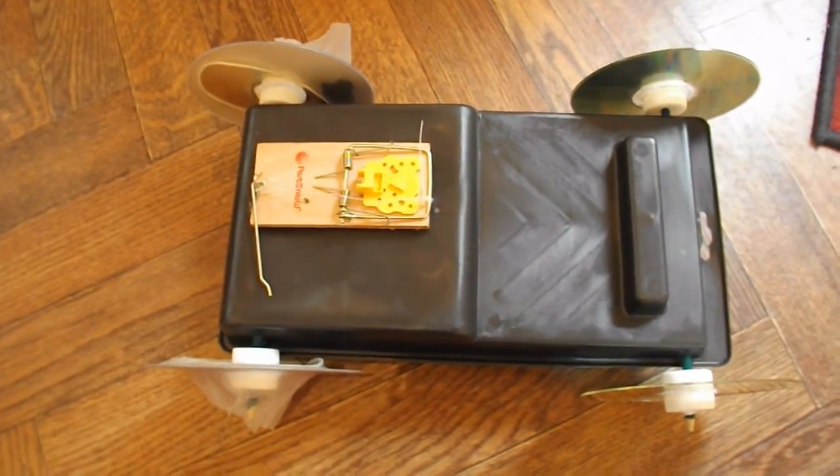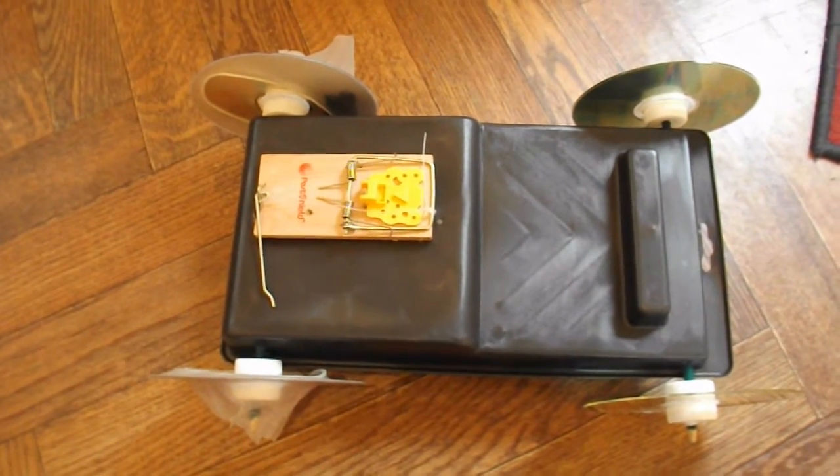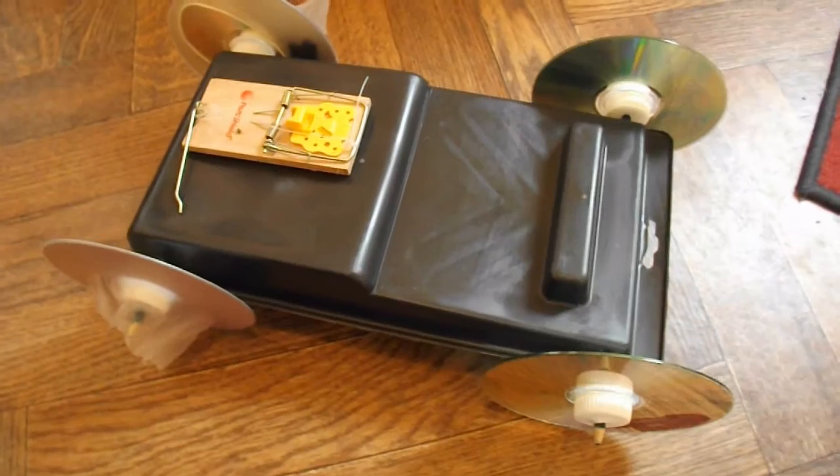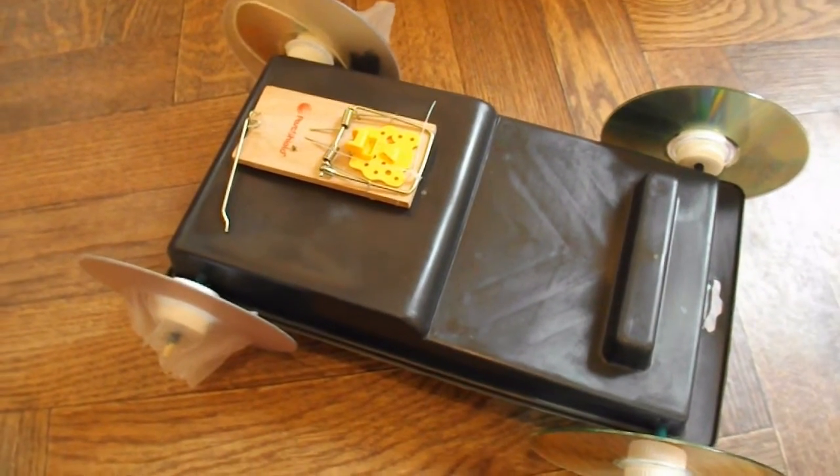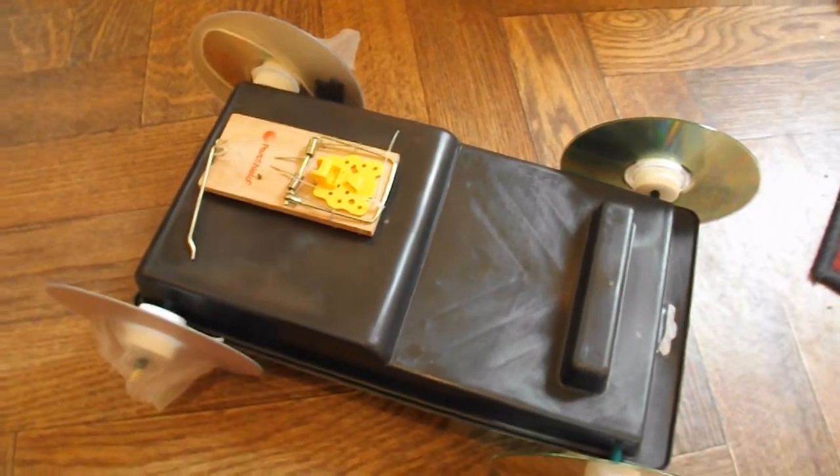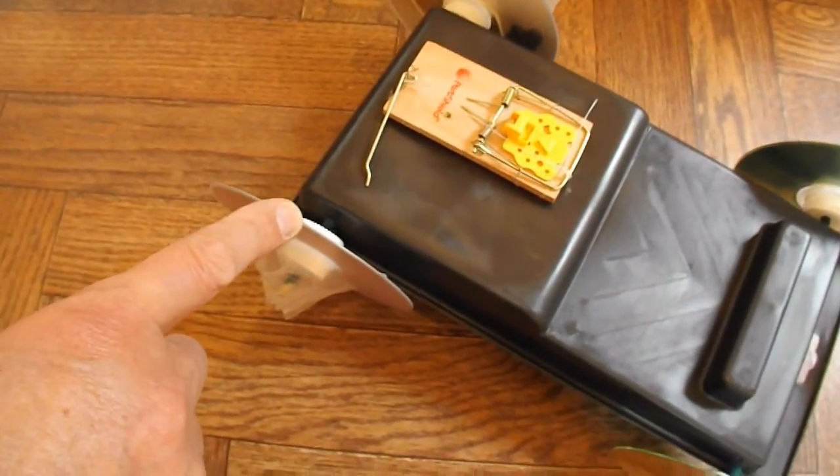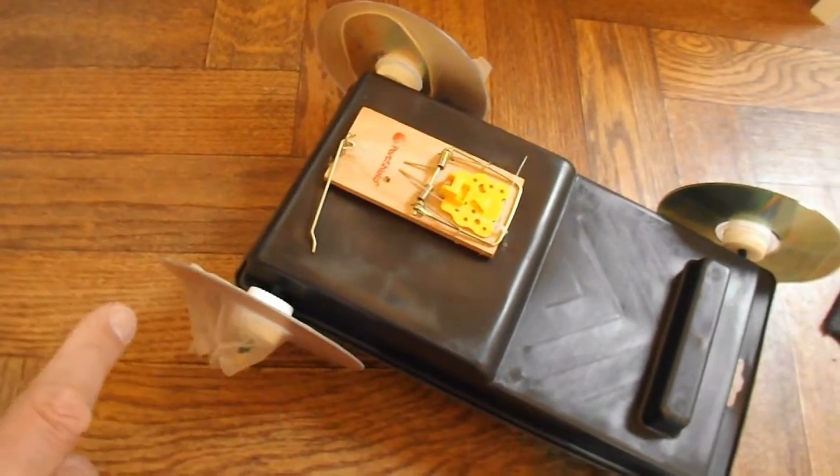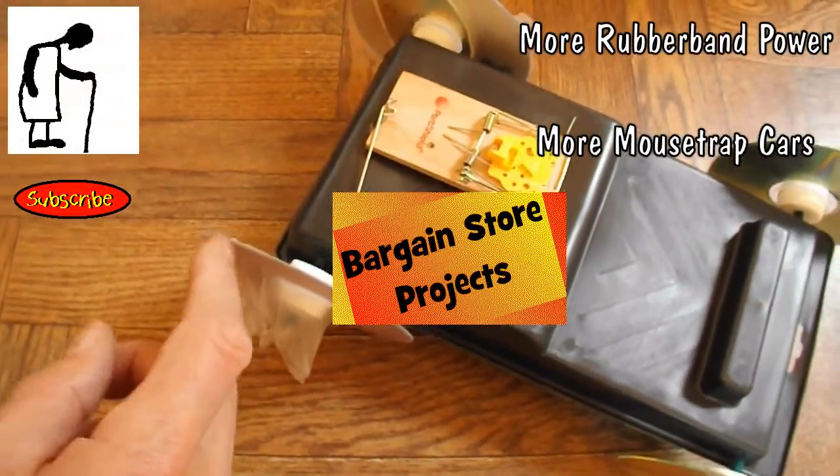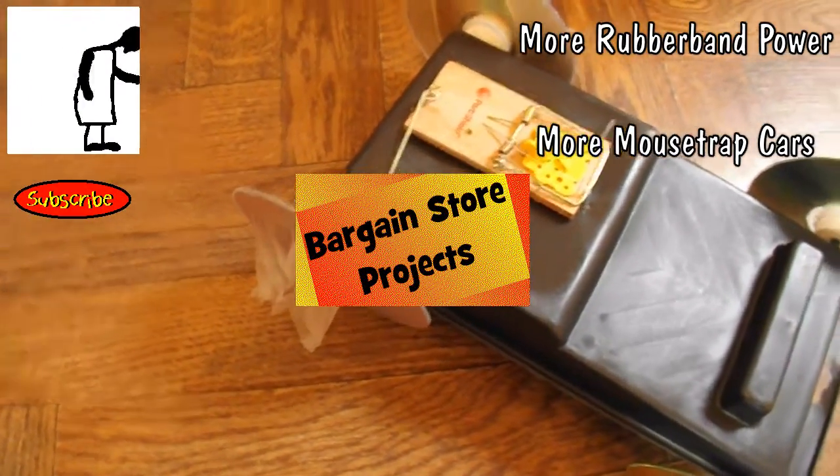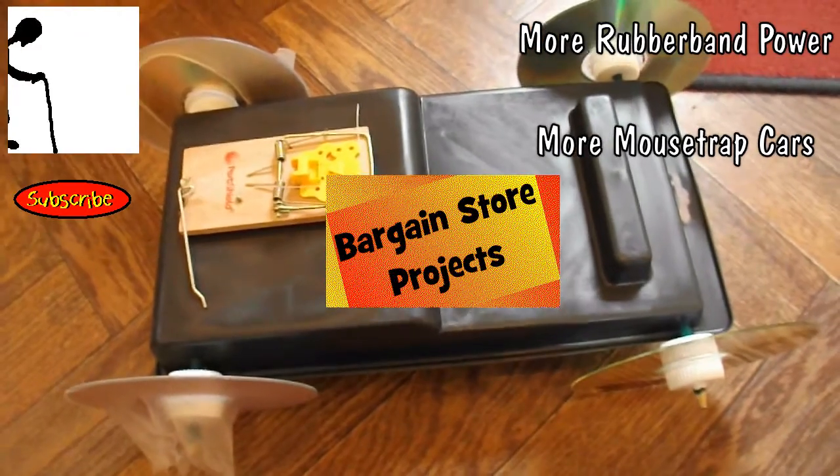Bargain store project number 36 I think. And all done in, well, an hour or so I should think. Oh, I've got the latex tyres because we didn't get enough grip when we've actually used the mousetrap. That's made from latex gloves just stretched over the wheels and the excess cut off. There we go. Job done.